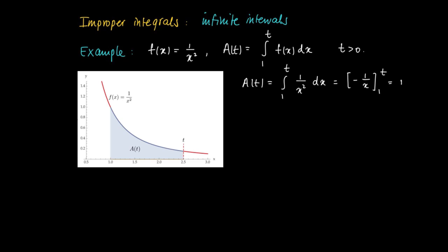Now, what happens if we choose t very large? Or suppose we take even the limit for t to infinity. So if we take the limit for t to infinity, we see that A(t) goes to 1. Since 1 over t vanishes, goes to 0.